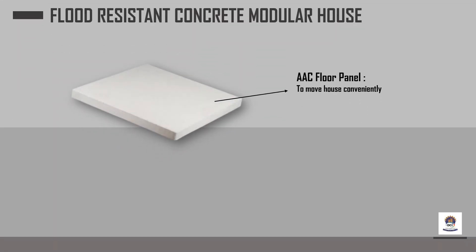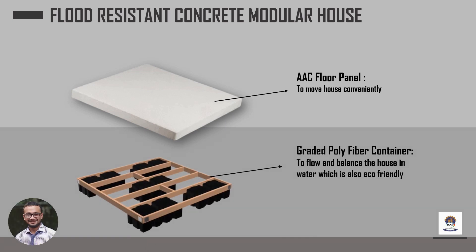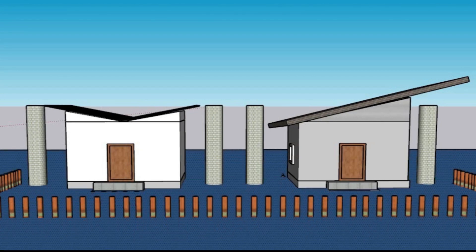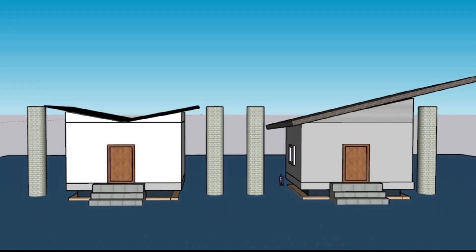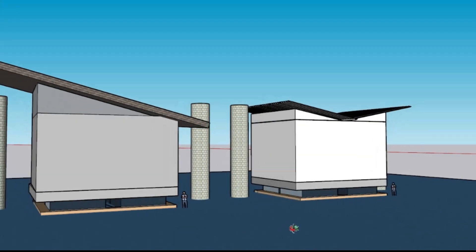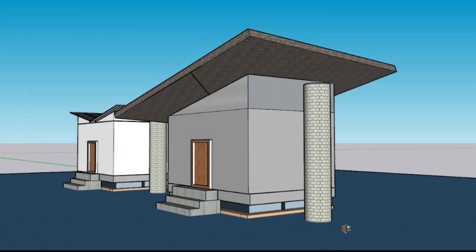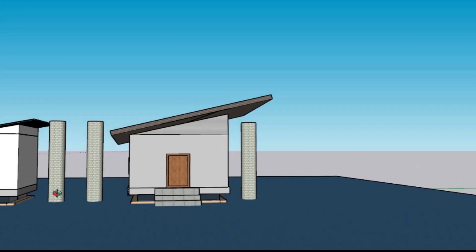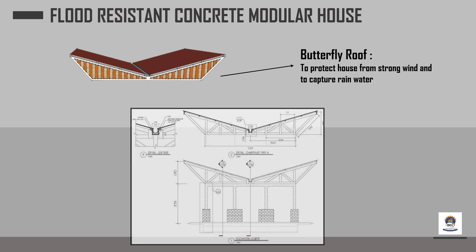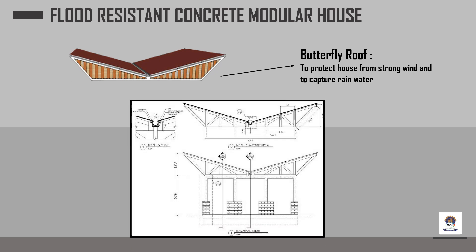As the floor panel is lightweight, it is easily balanced by grated polyfiber containers to float the house in floodwater. When the water level rises, the house will rise simultaneously with the water level and start to float. The solid walls provide excellent resistance against lateral wind loads, so our flood-resistant modular house can easily withstand heavy wind. We used a butterfly roof because it is resistant to strong winds and will help collect rainwater for use during floods, as pure water would be scarce at that time.